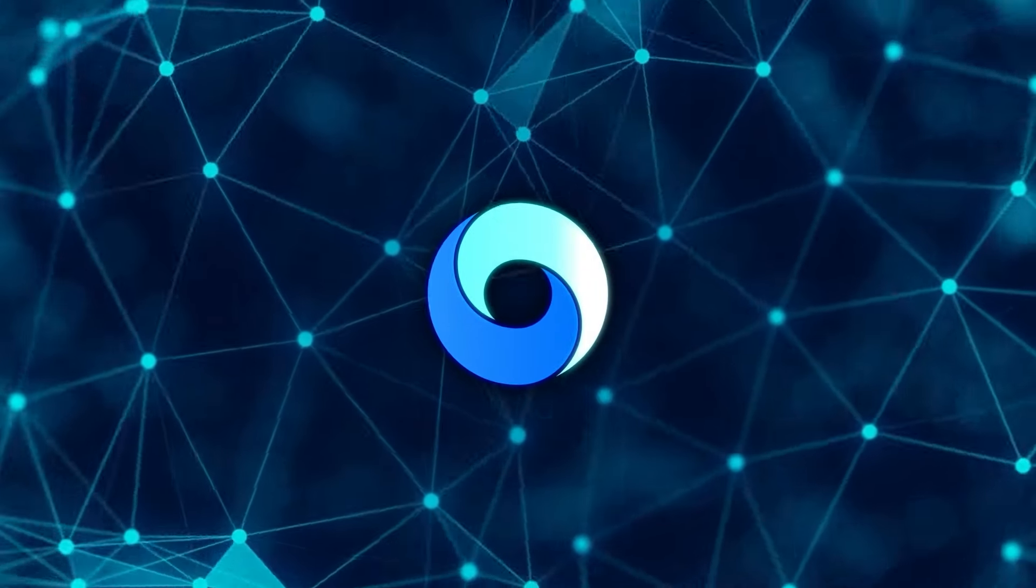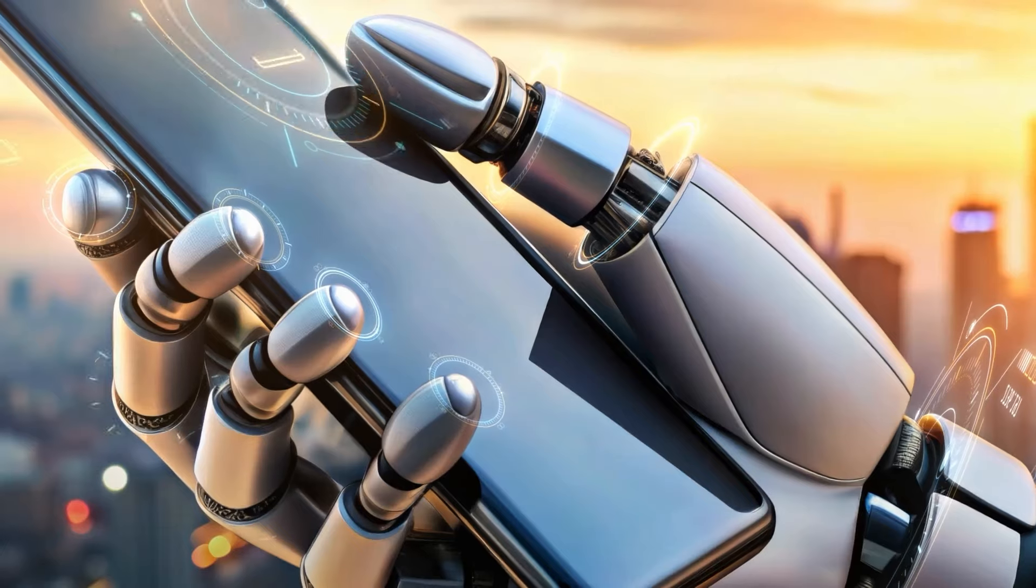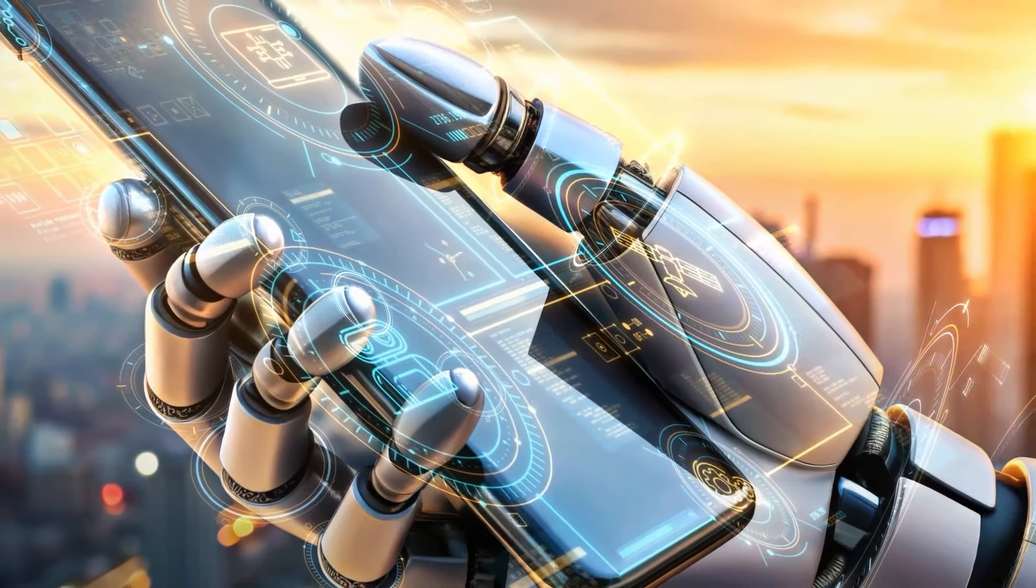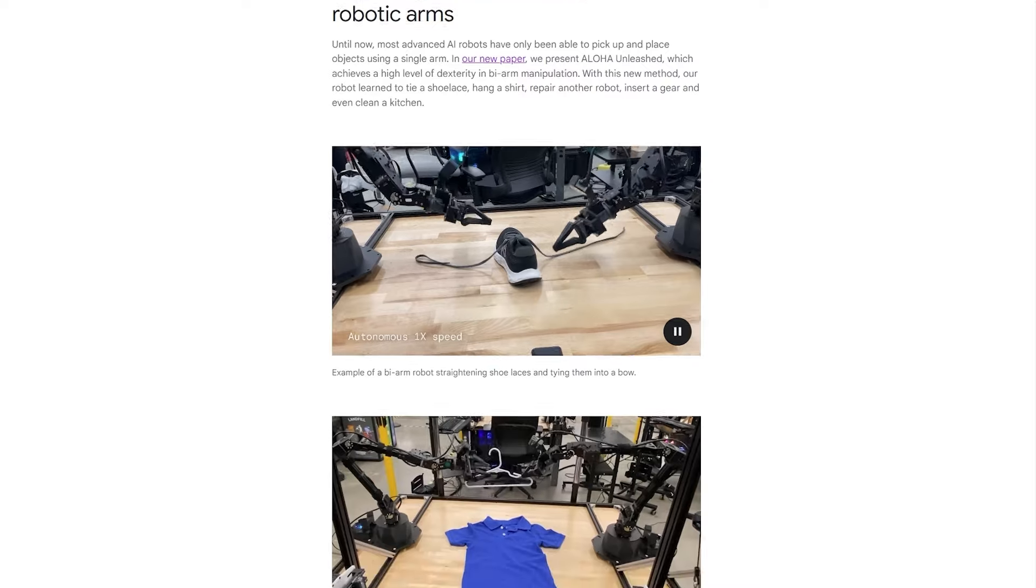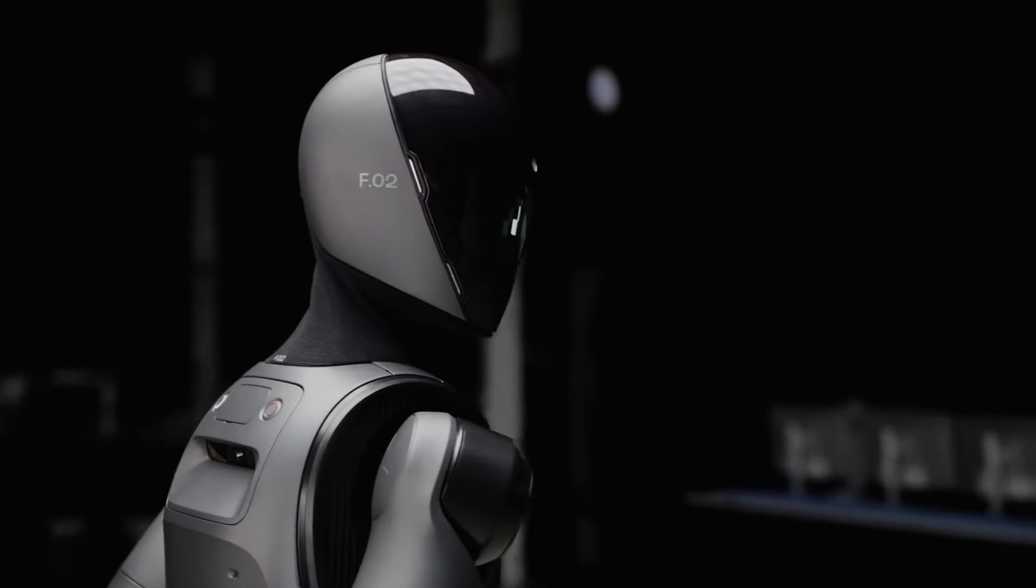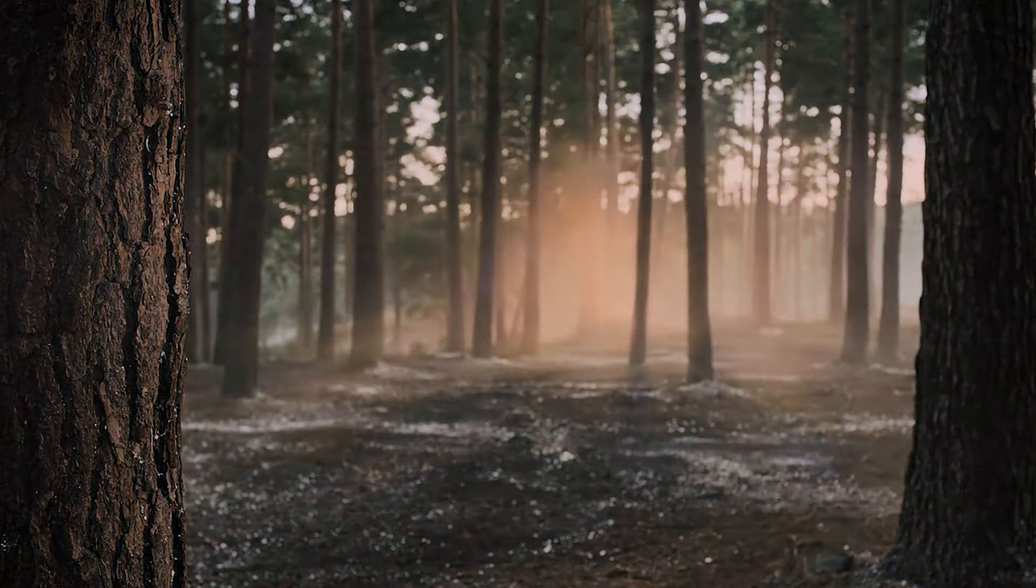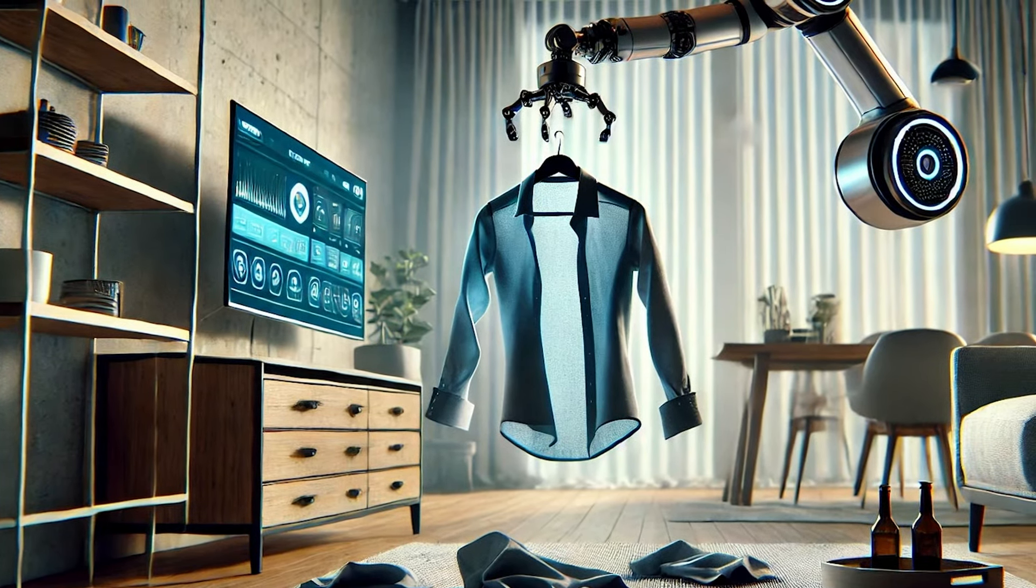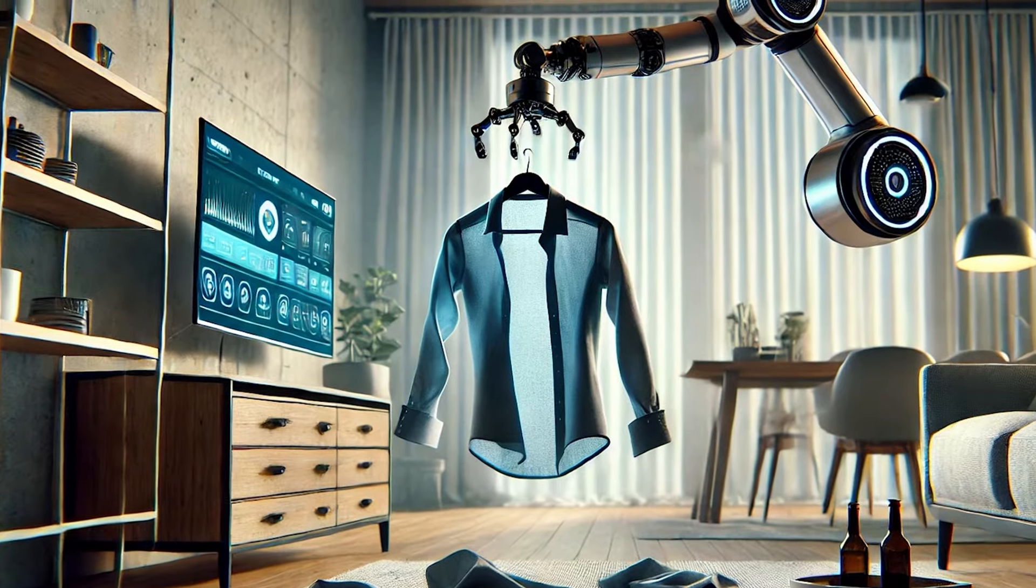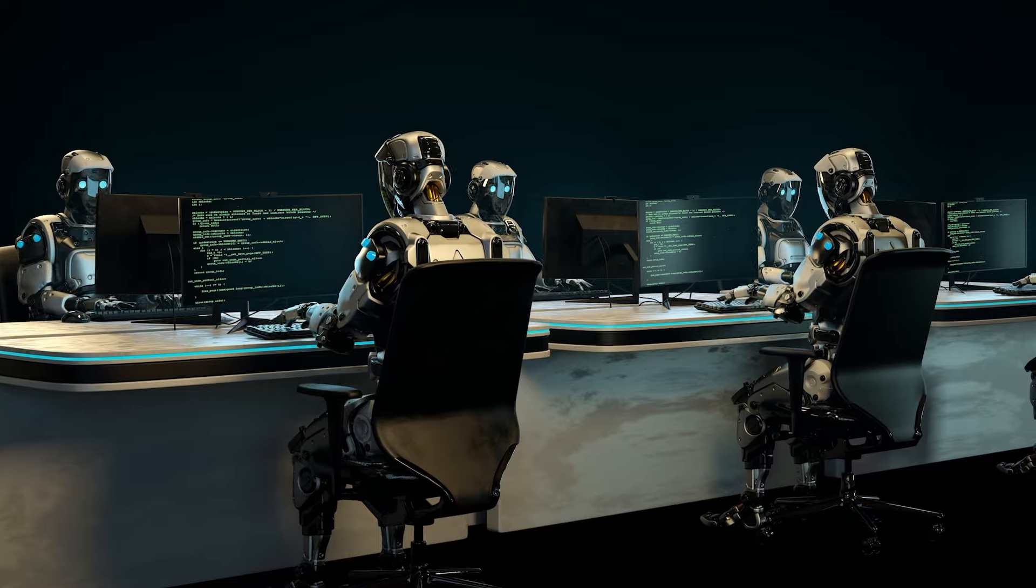The goal now is to scale these systems even further, enabling robots to handle more tasks and environments without needing task-specific training each time. Ideally, future robots will be able to switch between different tasks seamlessly, using one set of learned behaviors to tackle new challenges as they arise. Additionally, researchers are working on making these systems more reactive, allowing robots to adjust their actions in real time if something goes wrong. For example, if a shirt slips off a hanger mid-task, the robot should be able to recognize the issue and correct it on the fly, just like a human would.